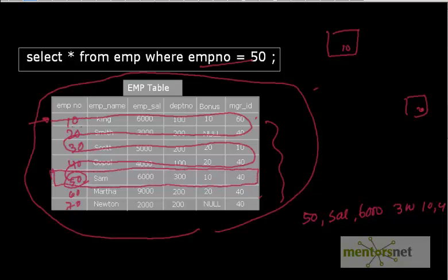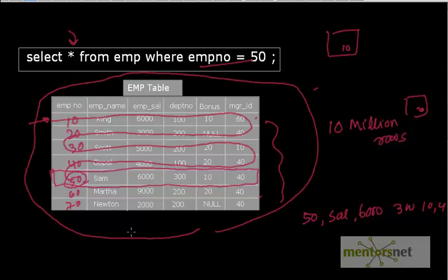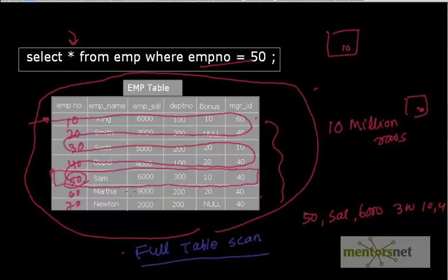Now imagine this table has 10 million rows. Oracle does the same process, scanning one row after another, and this query may take a very long time. This process of finding data by scanning every row is called a full table scan. This full table scan needs to be addressed if you want to get results in a reasonable time.